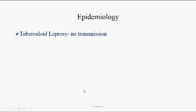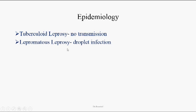Epidemiology. There are two varieties of leprosy infections. One is tuberculoid leprosy — patients suffering from this infection cannot transmit it to other people. Whereas lepromatous leprosy patients can always transmit this infection through the respiratory route by droplet form.